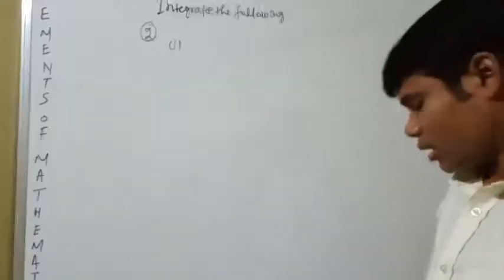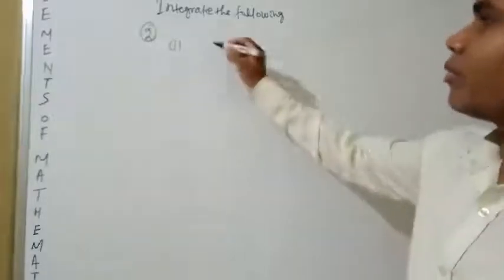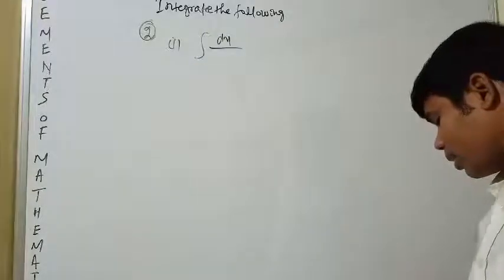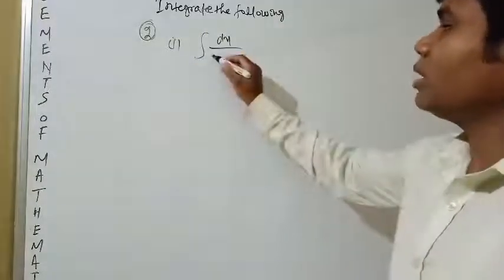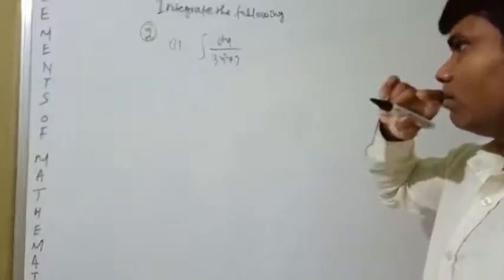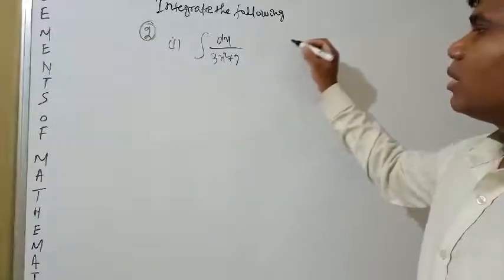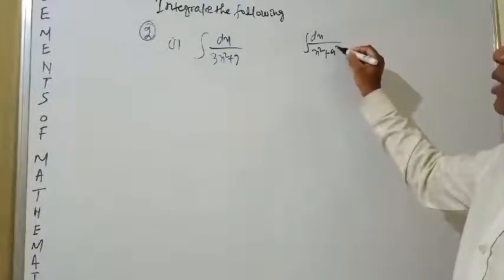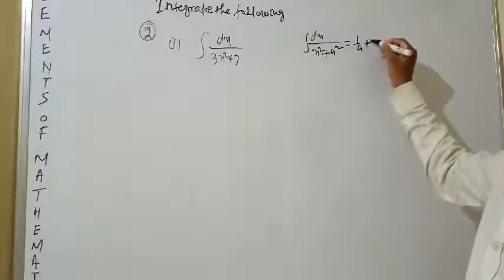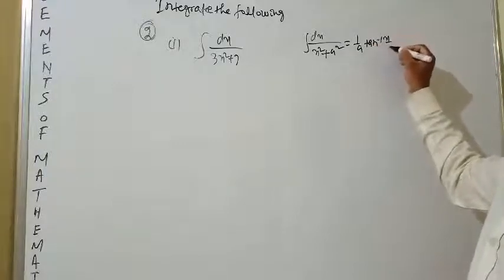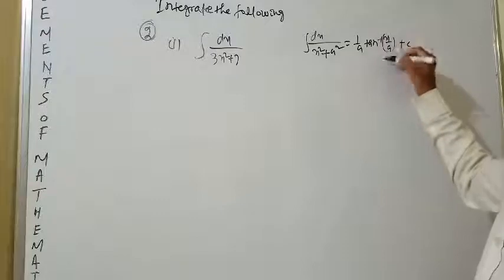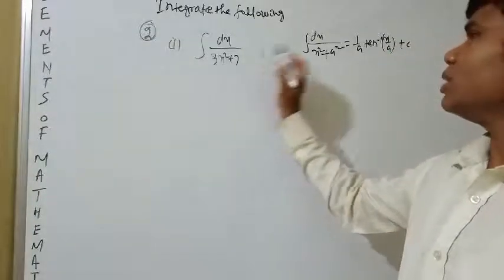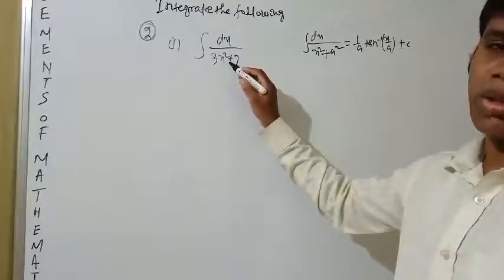In Part 1, the question is: integration of dx divided by 3x² plus 7. You know the formula: ∫dx/(x² + a²) = (1/a) tan⁻¹(x/a) + c. However, you cannot use this formula directly because here 3x² is given, not x².